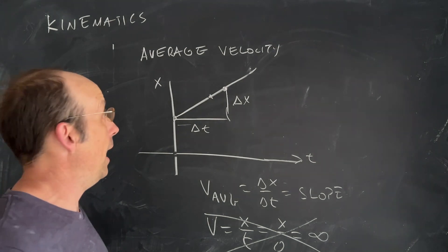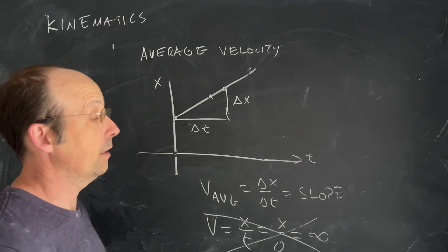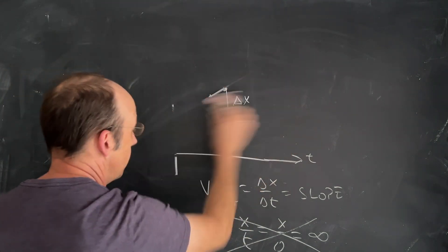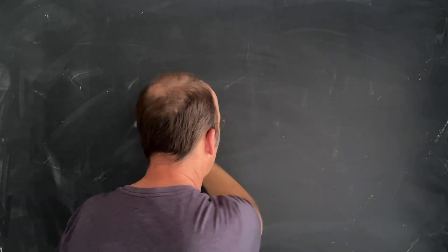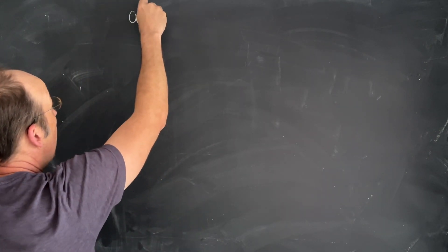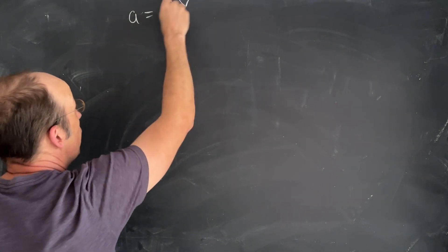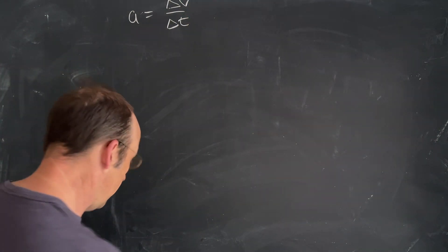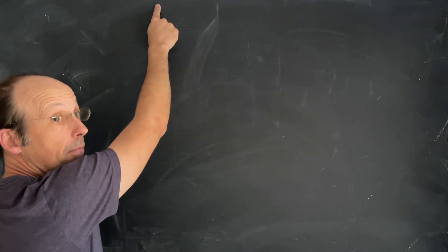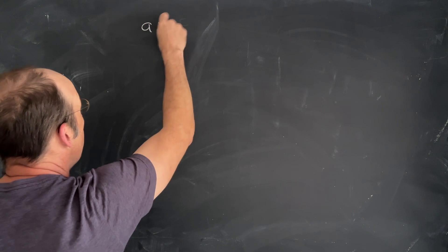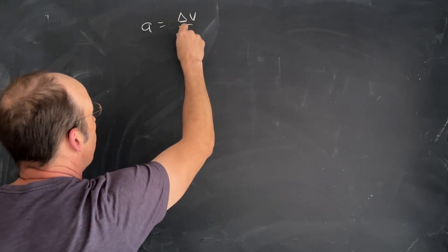Next, let's look at acceleration. We define acceleration as the rate of change of velocity: a equals delta v over delta t.